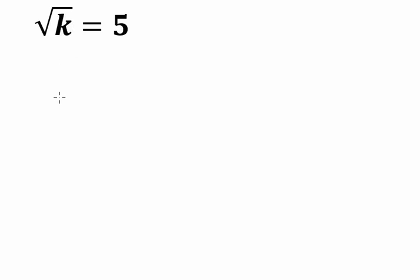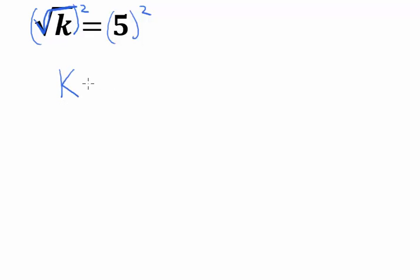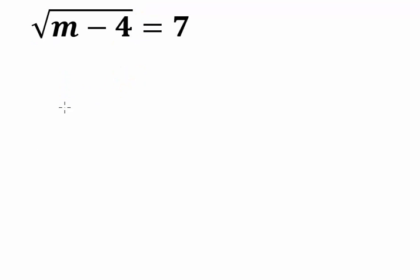Now, if I didn't think of that, how could I have solved it? Well, I have a square root on one side of the equation and I want to get rid of it. I can't just square one side — I have to square the other side as well. Square root of k, squared, is equal to k — that's the whole point, to get k alone. And 5 squared is equal to 25. Pretty easy.